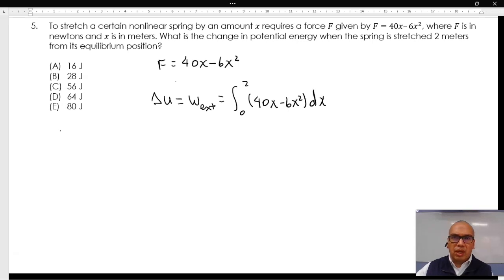This is equal to the integral from 0 to 2 meters of the expression 40x minus 6x squared. Integration gives 20x squared minus 2x cubed evaluated from 0 to 2 meters, which is 80 minus 16 equals 64 joules.